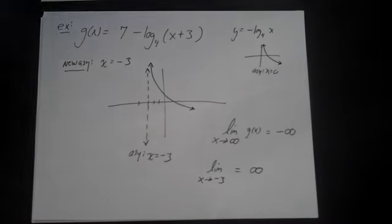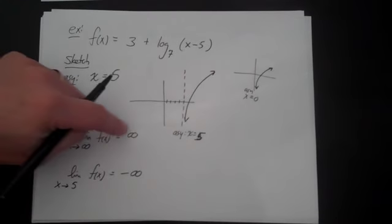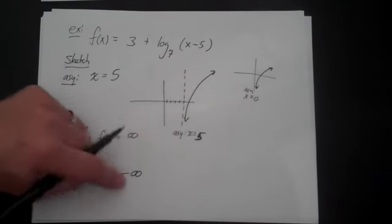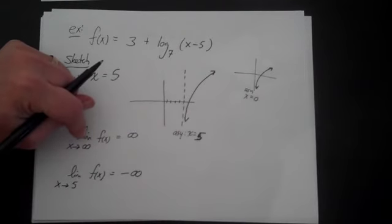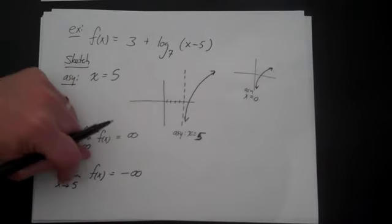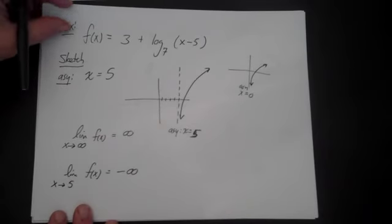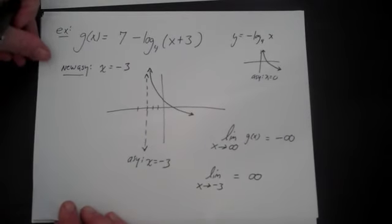If you notice in both of these problems, the answers are always going to be either positive or negative infinity. One limit is as x goes to positive infinity, and the other is as x goes to the asymptote. Let's do one more problem, which is one of the harder problems we've done.